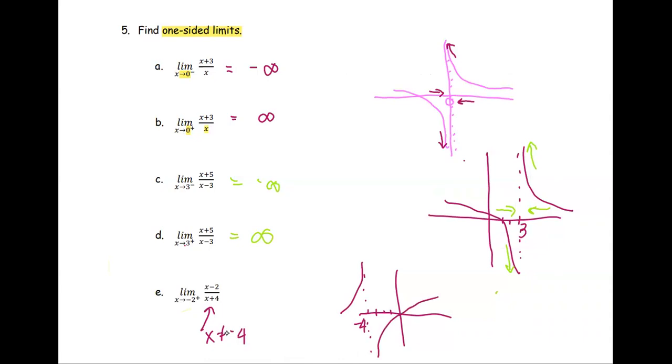When we look at the limit of the function as x approaches negative 2 from the right, negative 2 is right there. From the right side, the graph provides a coordinate or the value that we can see. In this situation, at negative 2.